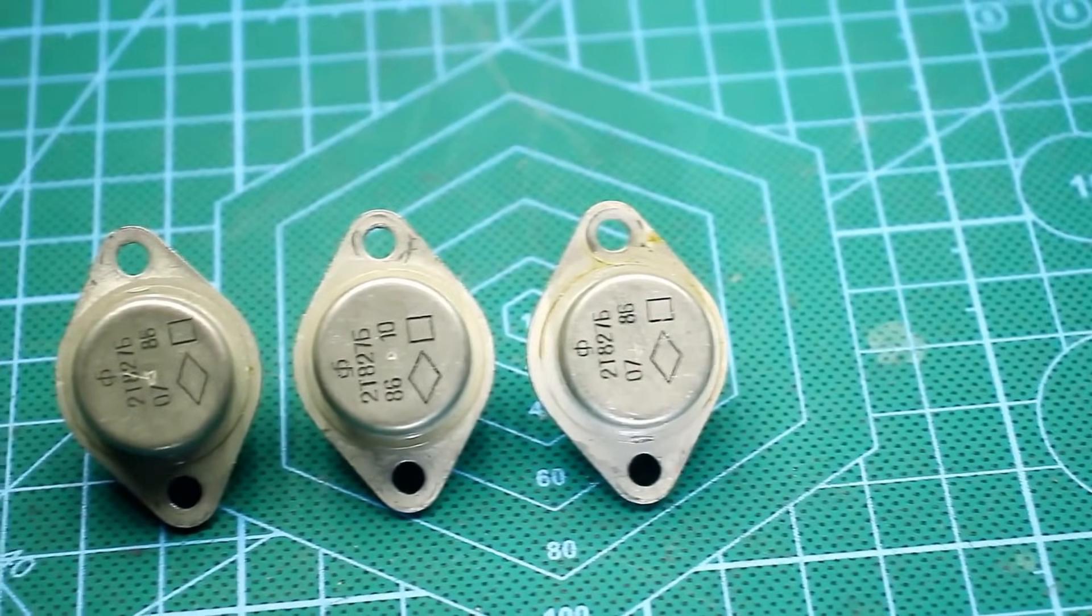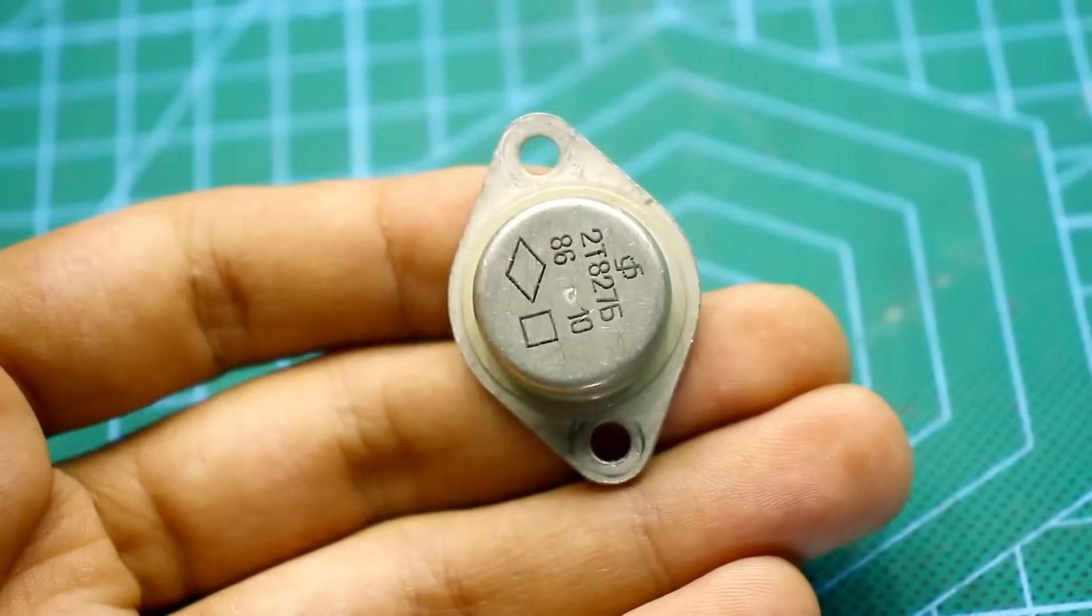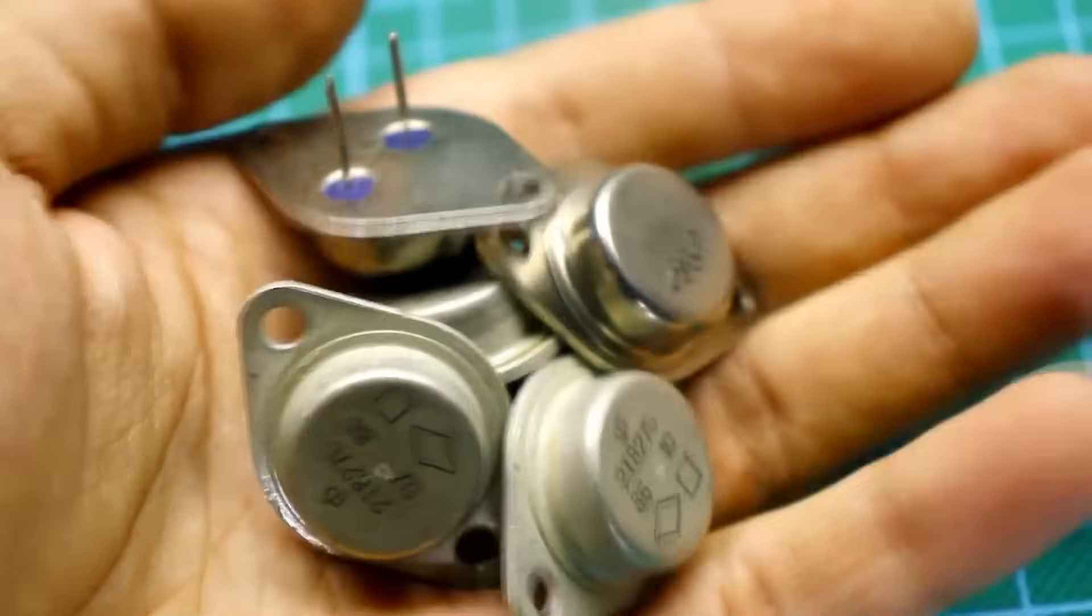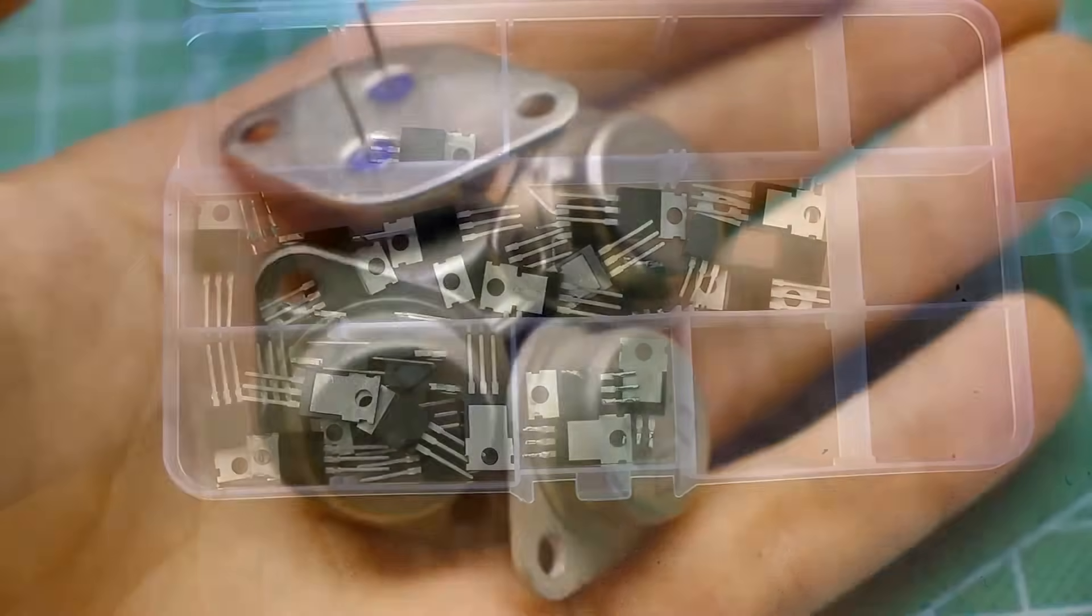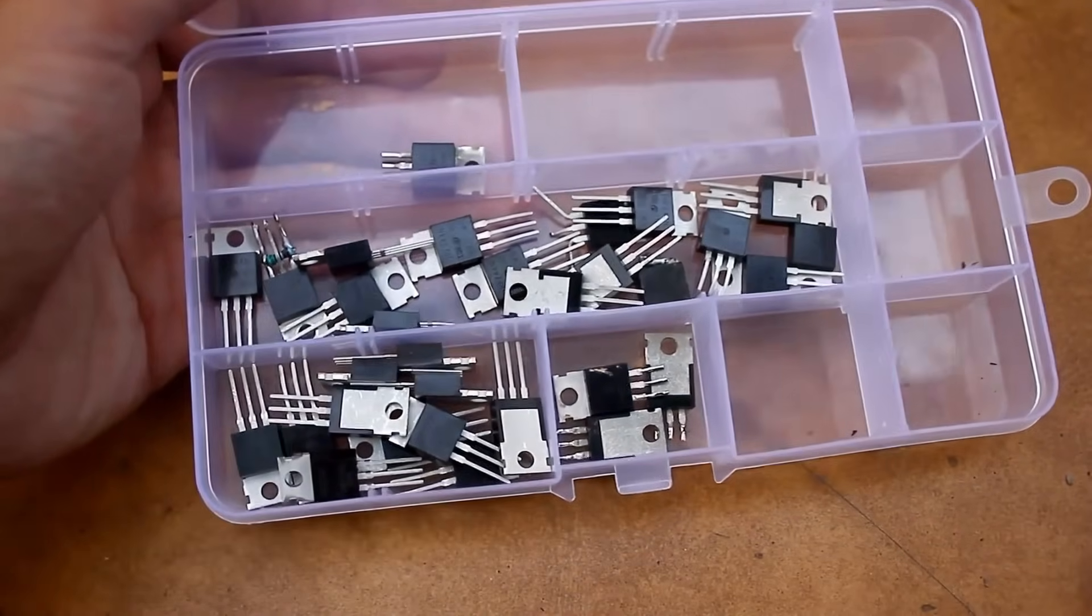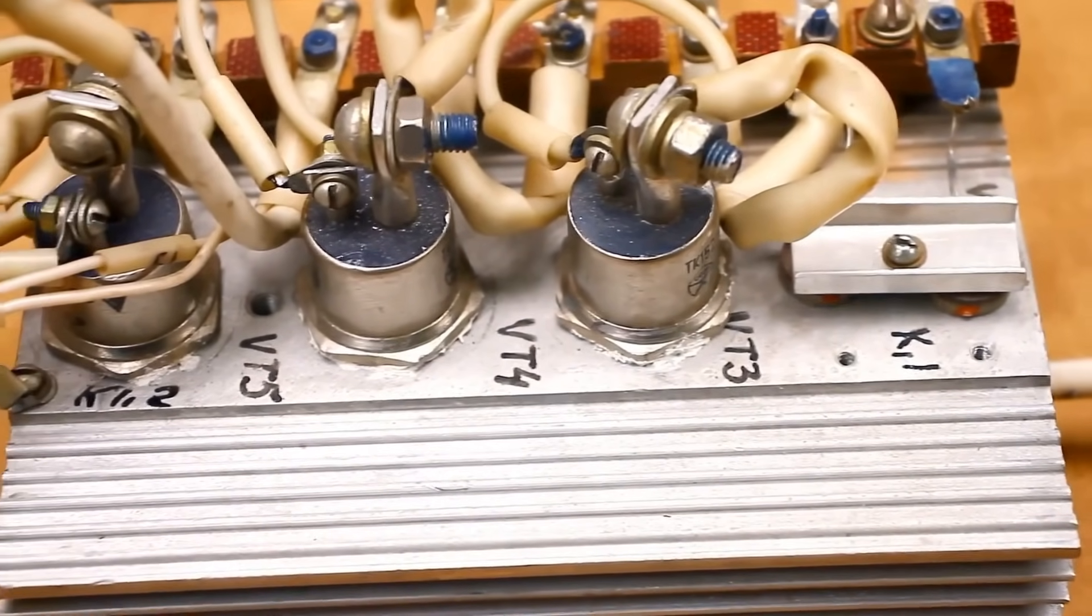I'll repeat just in case regarding the choice of transistors. If they are in a TO-247 package, you can get 70W from each transistor. Two transistors can handle 140-150W. If the transistors used are in a TO-220 package, each transistor can handle 40W.